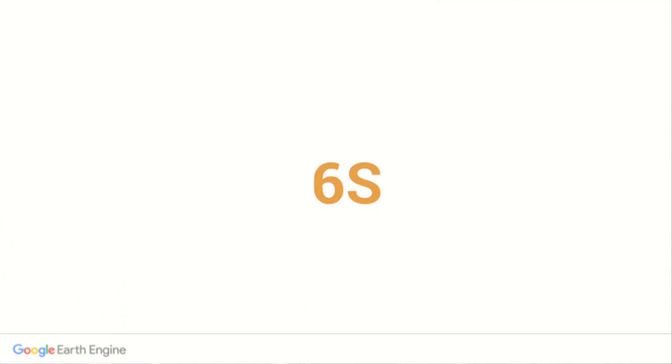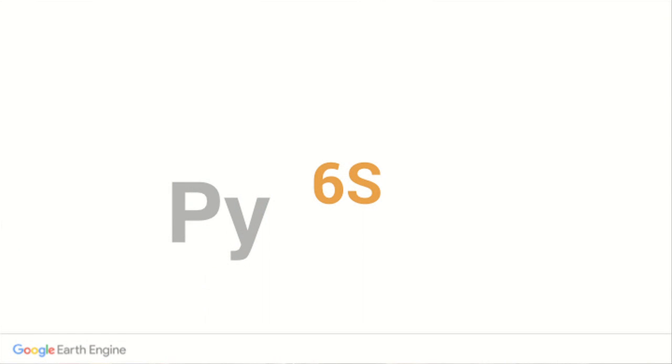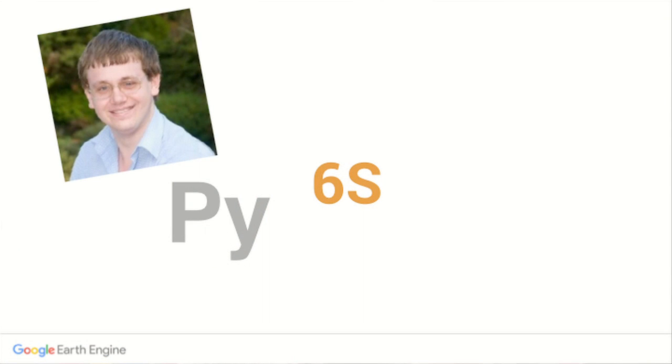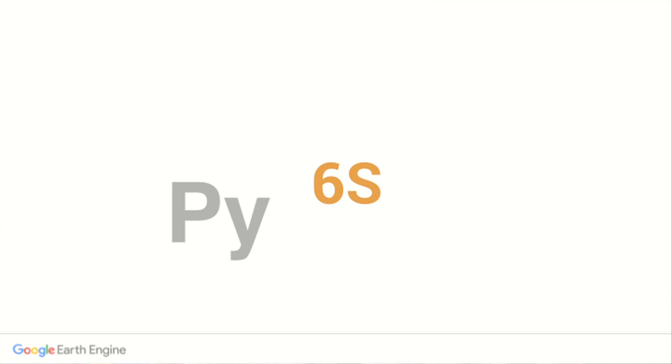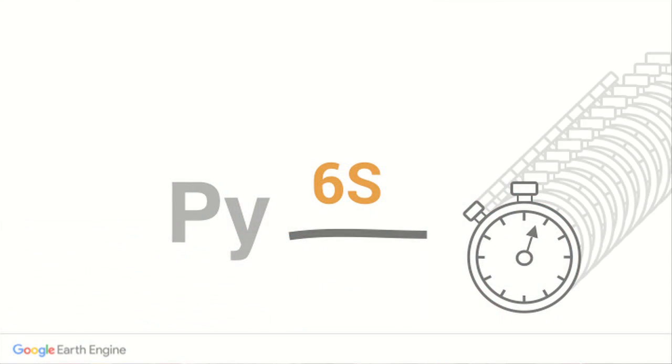6S is an open source radiative transfer code which models the interaction of sunlight with the Earth and its atmosphere. It is at least as accurate as ModTran. NASA and USGS use it for some major satellite missions, including Landsat and MODIS. We interact with 6S through an excellent Python wrapper called Py6S, created by Robin Wilson. However, the accurate physical modeling of Earth's atmosphere performed by 6S takes around two seconds to run on a standard desktop, which adds up if you want to correct a significant number of images.